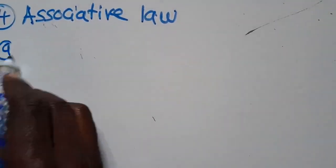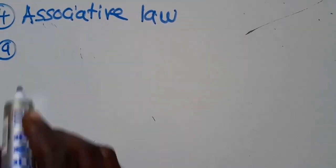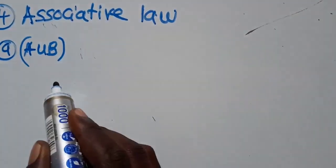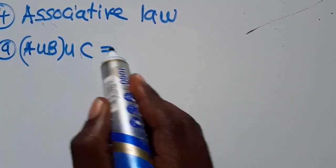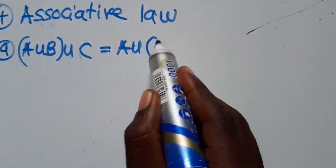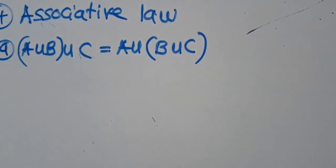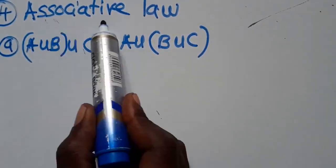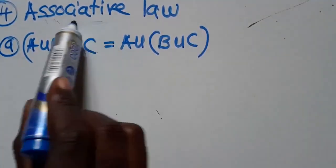The first thing you need to understand under the associative law is that (A∪B)∪C is equal to A∪(B∪C). These two are just the same. This is what it means under associative law.